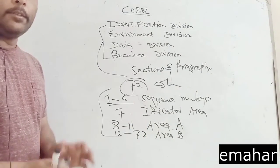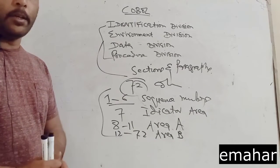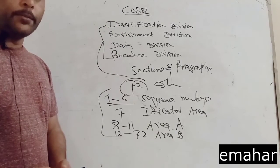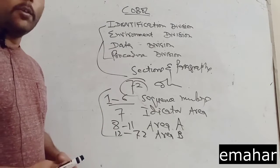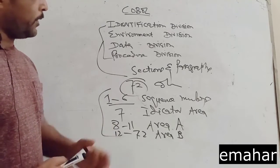Identification division is used for program identification. Program ID is the only mandatory paragraph in this division. All divisions, sections, and paragraphs are written in column 8. All COBOL statements in procedure division are written in column 12.